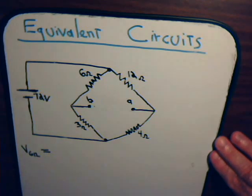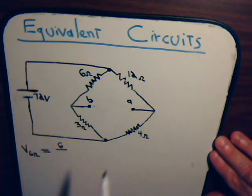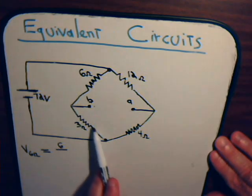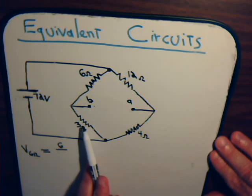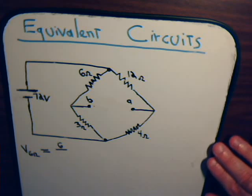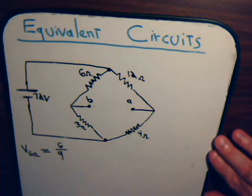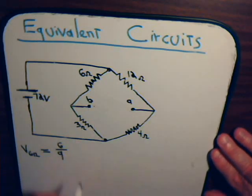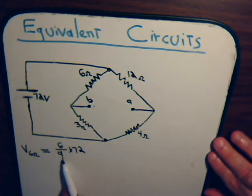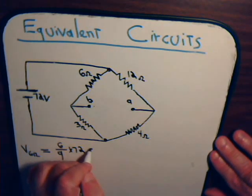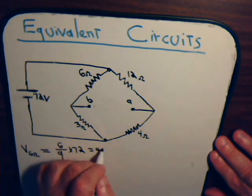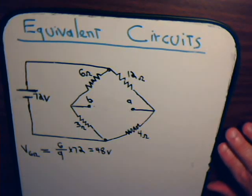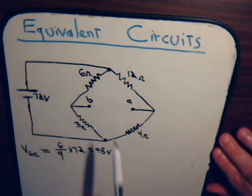Using the voltage divider principle, the voltage drop equals the value of this resistor divided by the sum of the two resistors in series. That's 6 divided by 9, and the voltage drop across the two resistors in series is 72 volts. So the voltage drop across the 6 ohm resistor is 48 volts.